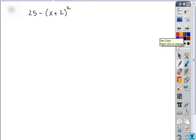A couple different ways you can approach problem 28. If you recognize that this is the form a squared minus b squared, where a is a value of 5 and b is a binomial x plus 2.